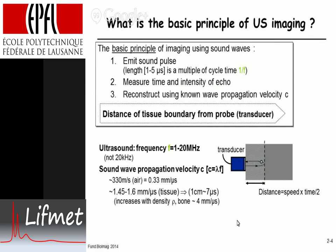To get a sense of sound propagation velocity: in air it's 330 meters per second — so lightning three seconds later is about a kilometer away — which converts to 0.33 millimeters per microsecond. In tissue, it's typically around 1.5 millimeters per microsecond, about five times faster. That means sound travels one centimeter in seven microseconds. This velocity generally increases with tissue density, so in bone, for example, the sound propagation velocity is about four millimeters per microsecond.